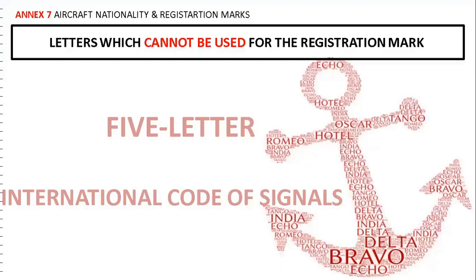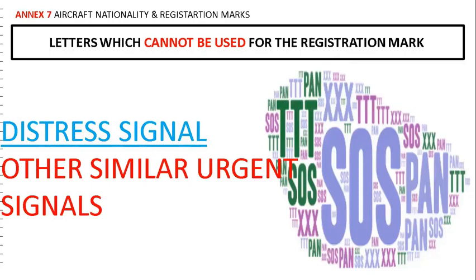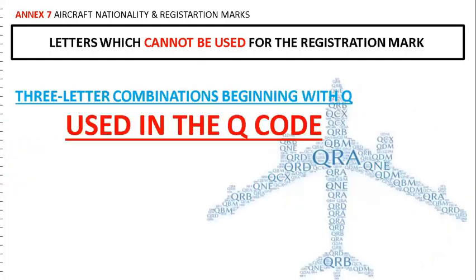Not all character combinations are permitted, as some may result in confusion during search and rescue tasks. Letters that cannot be used for registration marks include five-letter international code of signals, such as Alpha-Alpha-Bravo, Tango-Hotel-India-Romeo. Distress signals like SOS and similar urgent signals like PAN, Triple-T, and XXX are also not permitted. Three-letter combinations beginning with Q, which are used in the Q-code, also cannot be used for the registration mark.